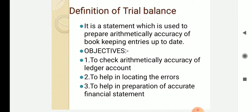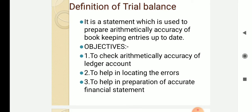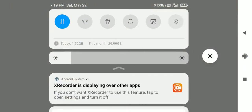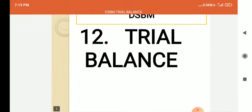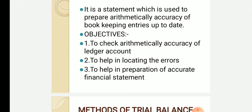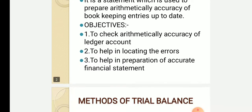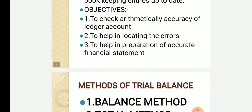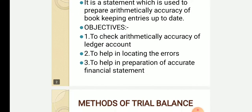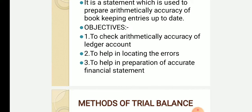Trial balance is a statement which is used to prepare arithmetically accuracy of bookkeeping entries up to date. What are the objectives of trial balance? First, to check the arithmetical accuracy of ledger accounts. Second, it helps in locating errors. Third, to help in preparation of accurate financial statements. These are the three objectives of trial balance.